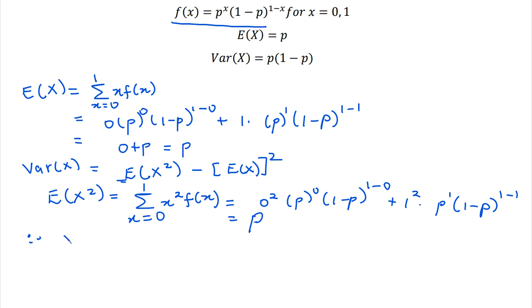Therefore, the variance of x becomes p subtract p squared. Remember this term over here is p, so it's going to be p squared, which can be simplified by taking p out and then we have 1 minus p. So this formula here is the variance of x in this case, which is the variance of a Bernoulli distribution.